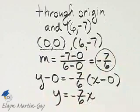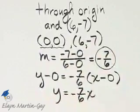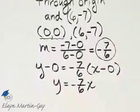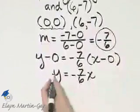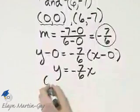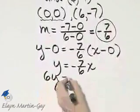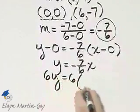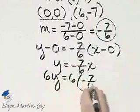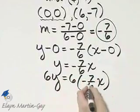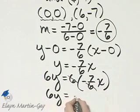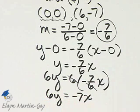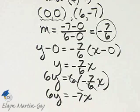I believe we were asked to write this in standard form. I'm going to go ahead and multiply both sides by 6 so I no longer have a fraction there. If I multiply the left side by 6, I have 6y. And if I multiply the right side by 6, look what happens. The 6s divide out. So I have 6y is equal to negative 7x. I will then add 7x to both sides to write it in standard form.